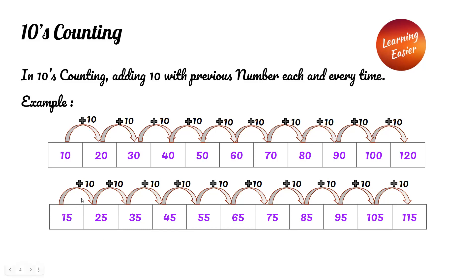Fifteen plus ten equals twenty-five, twenty-five plus ten equals thirty-five, thirty-five plus ten equals forty-five, forty-five plus ten equals fifty-five, and so on.